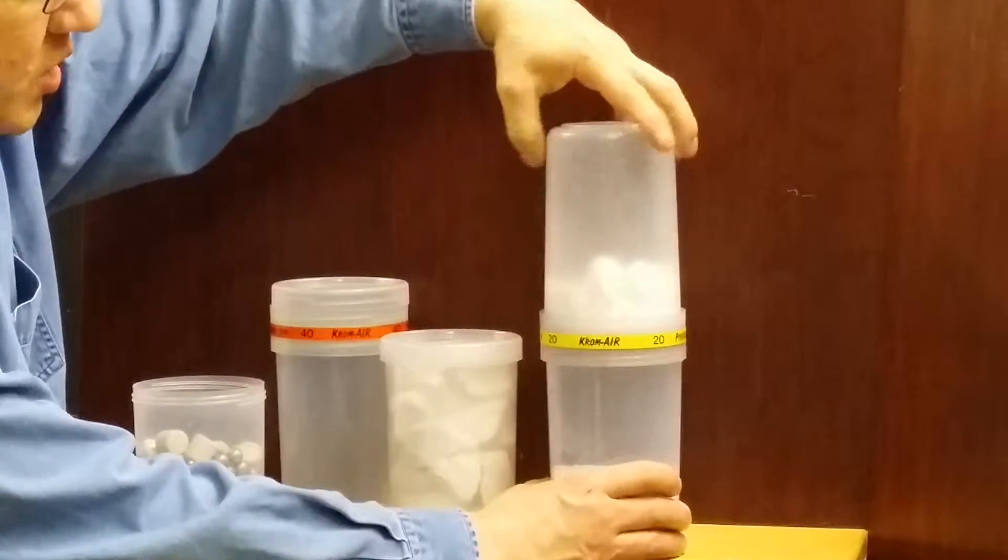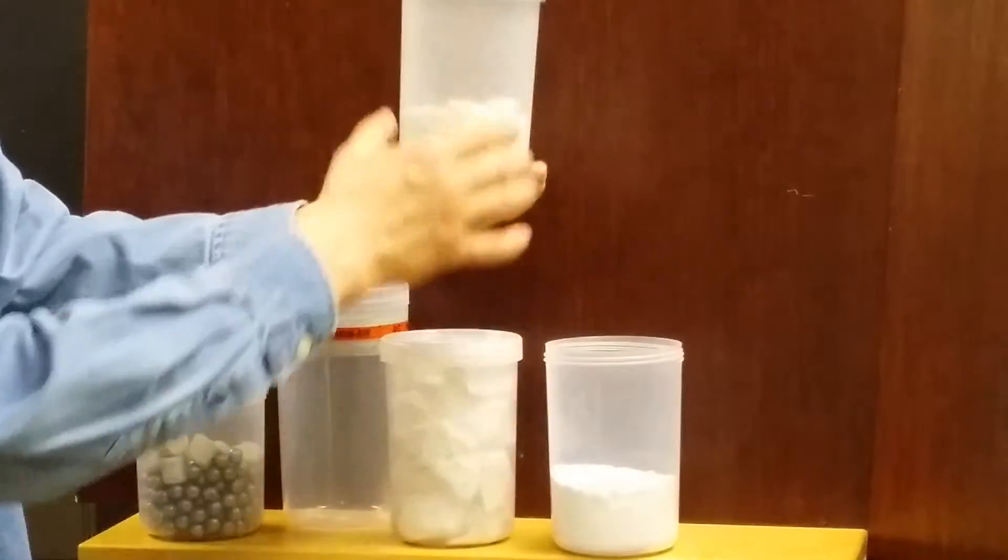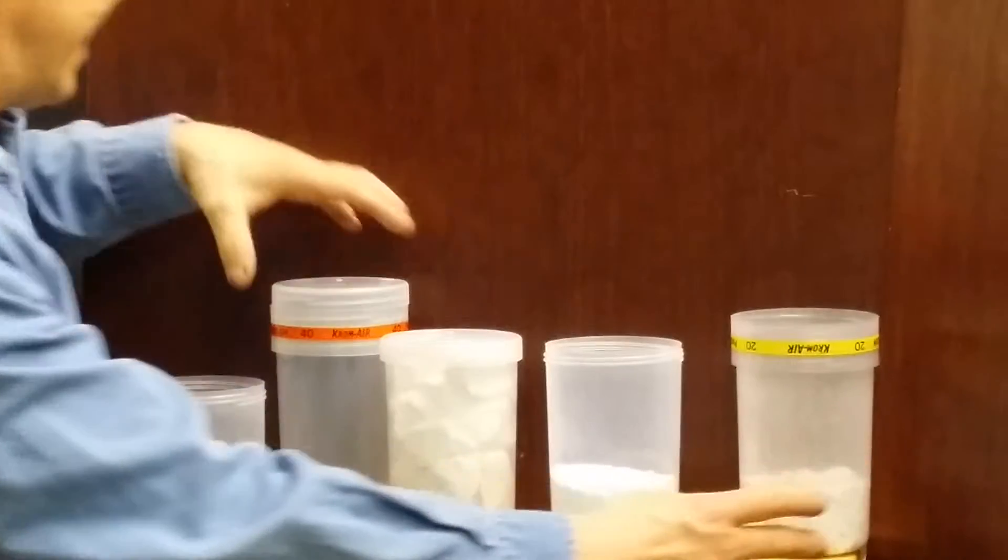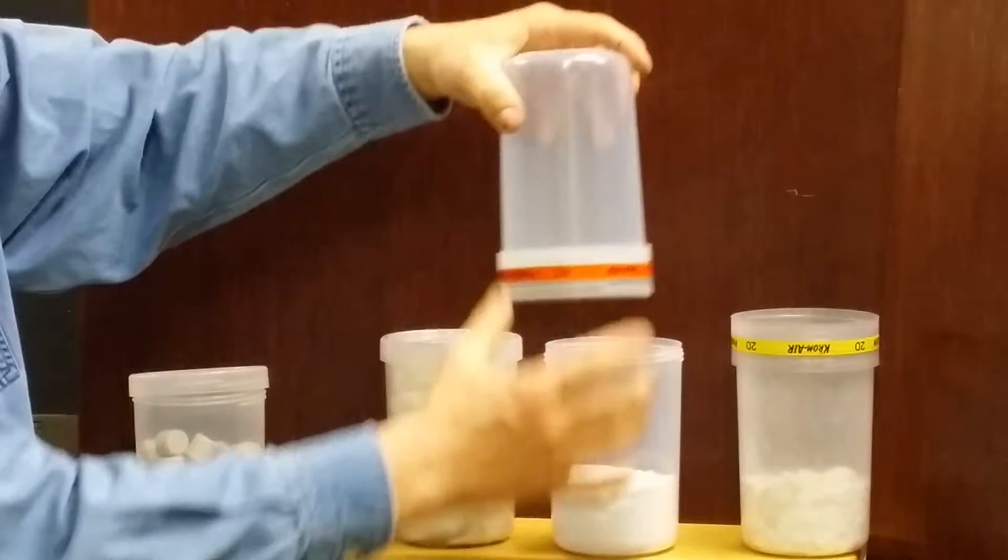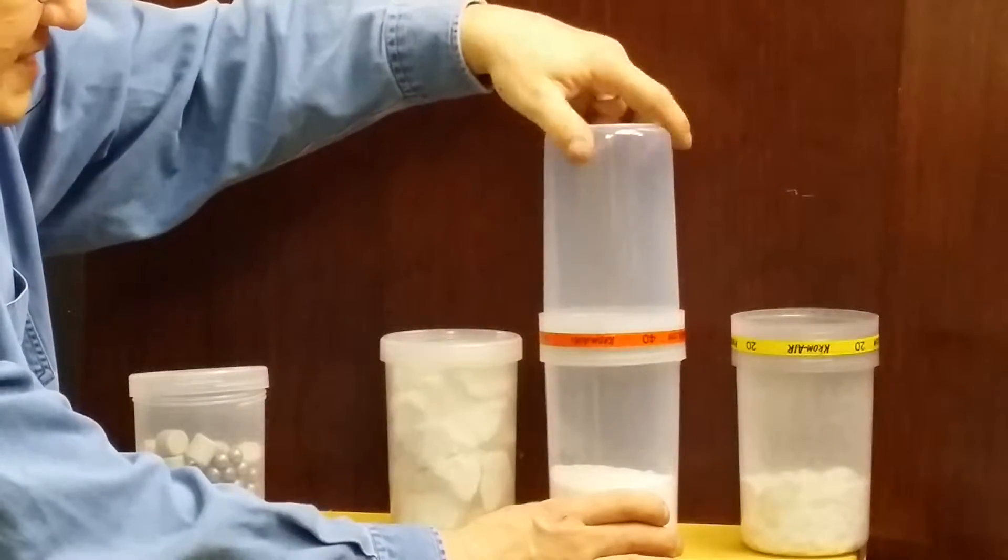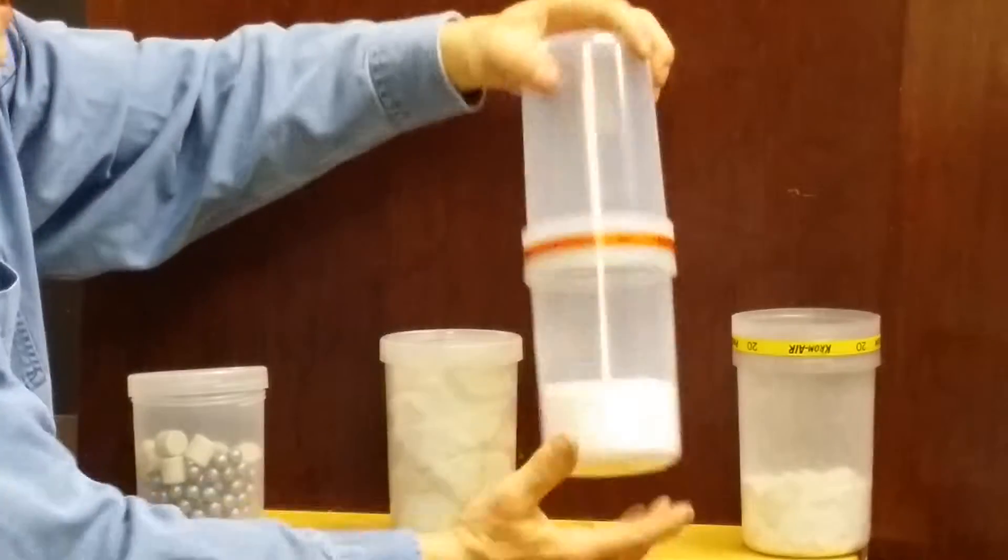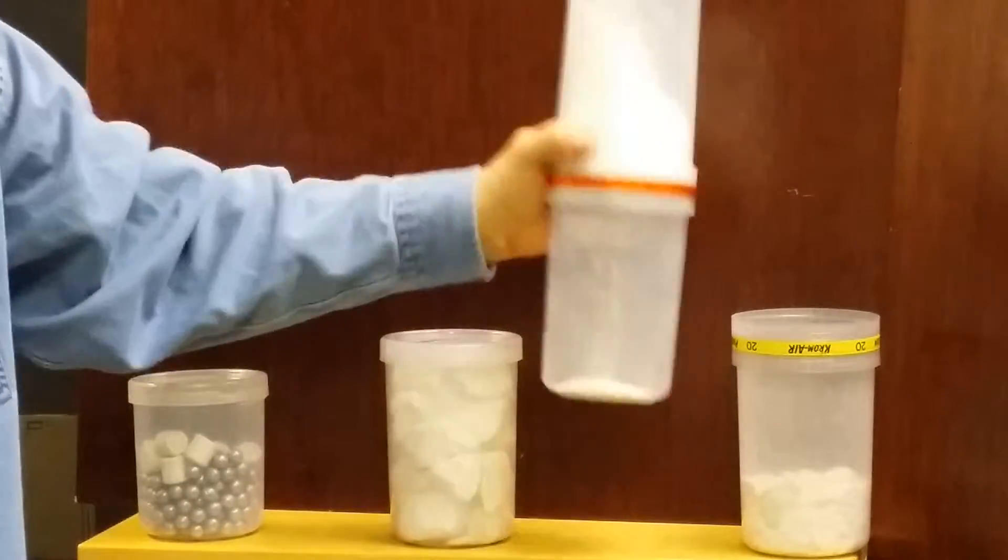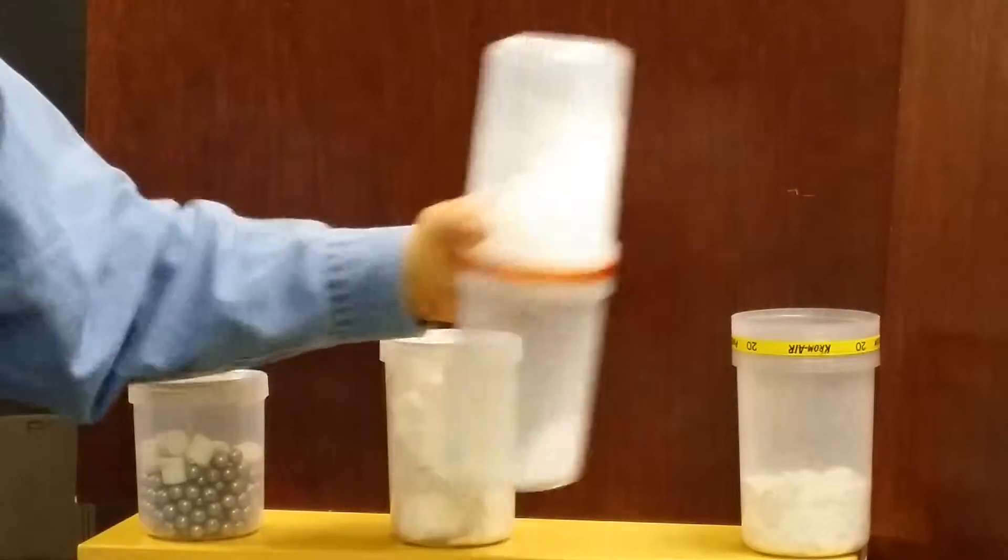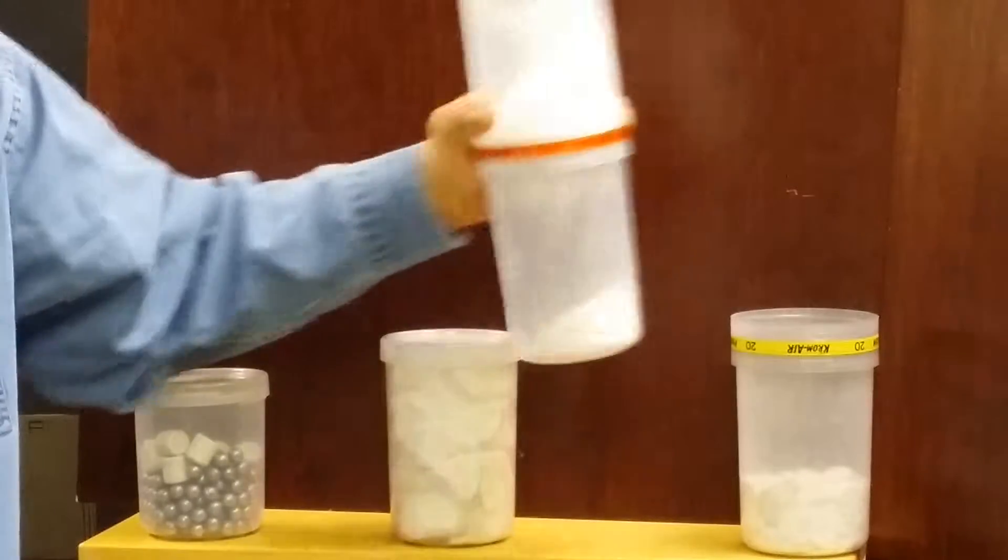Now I'll take my 40 mesh and a clean container and place that on top, screw that down nice and tight. Now I'll turn that over and I can further process this. You can see it's quickly moving down through a 40 mesh screen.